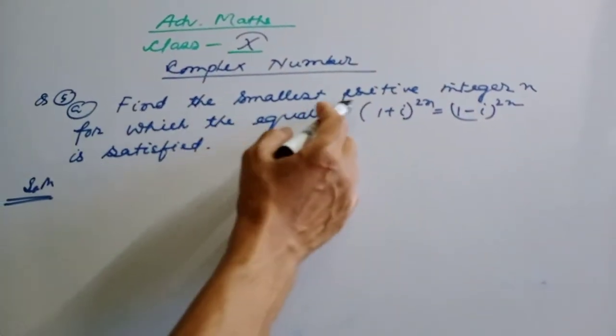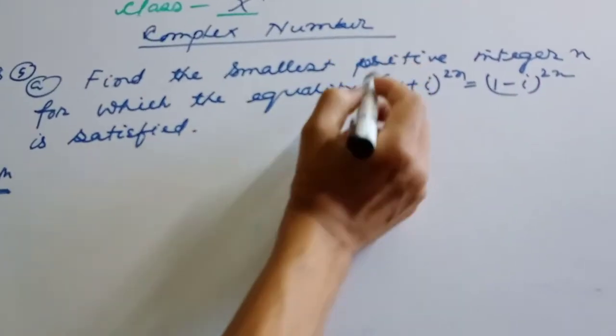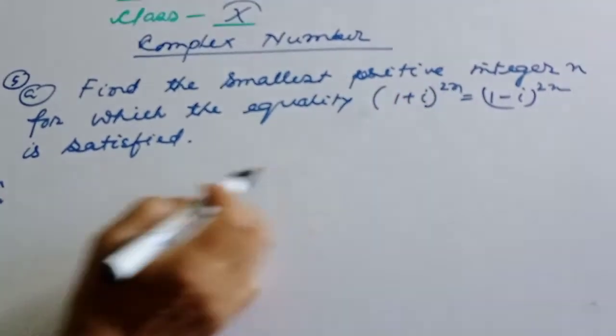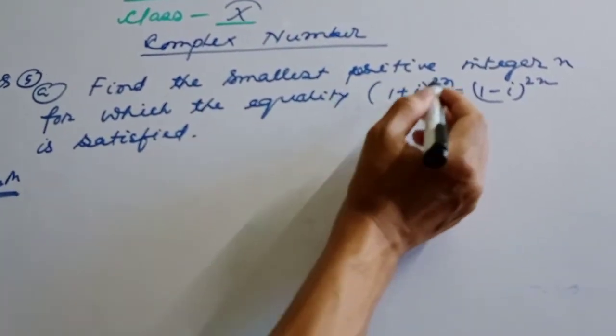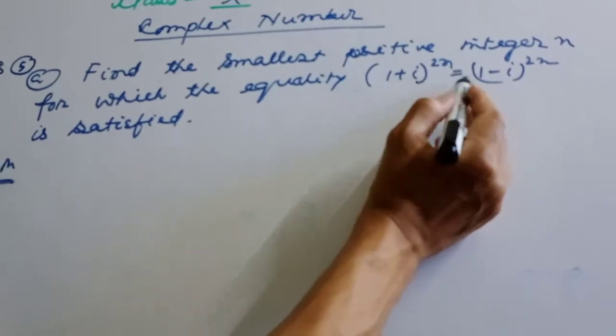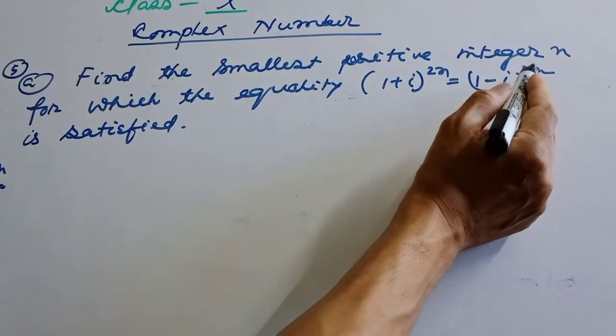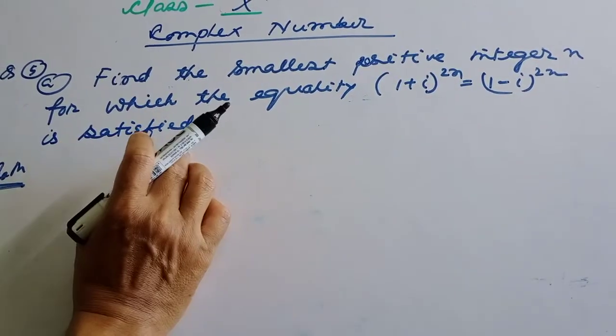Find the smallest positive integer n for which the equality (1 + i) whole to the power 2n equals (1 - i) whole to the power 2n is satisfied.